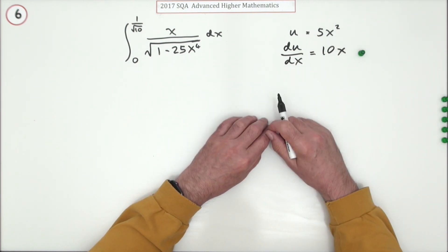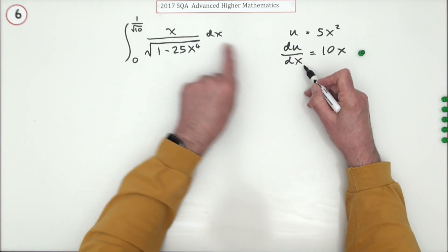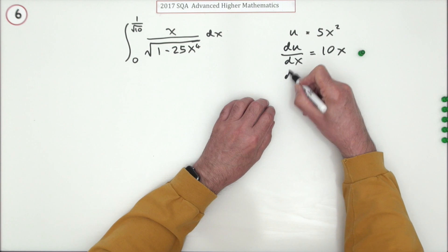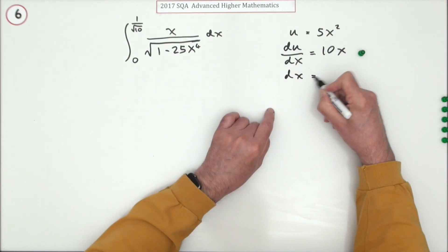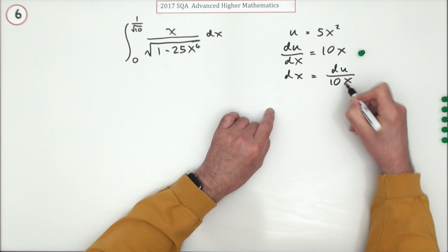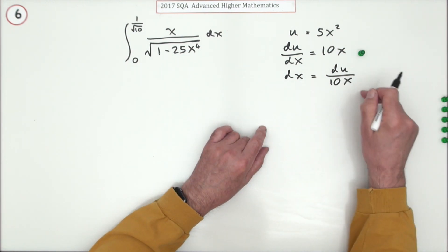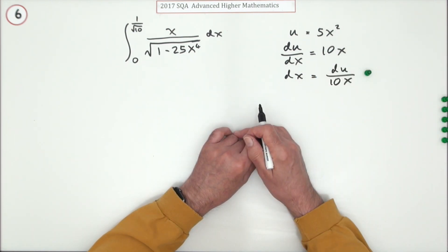You're going to change that part of it — you have to rearrange it to replace that differential. If that's the case, dx can be replaced with du over 10x. That should really be the first mark for rearranging it, but they do give you credit there.